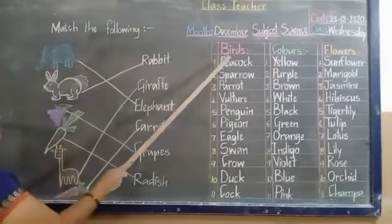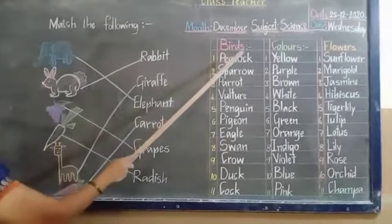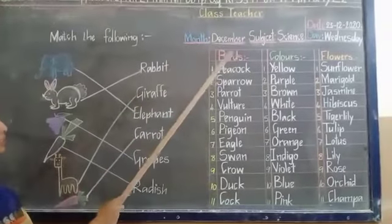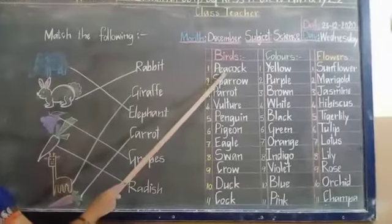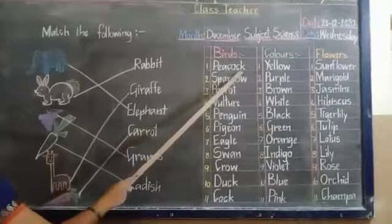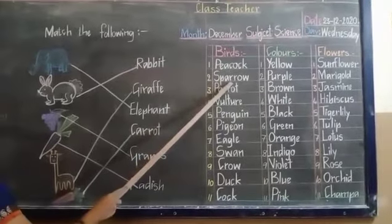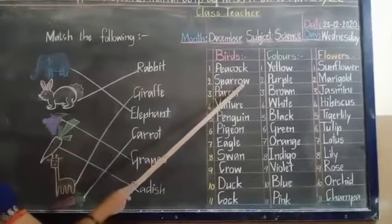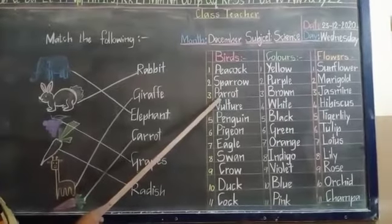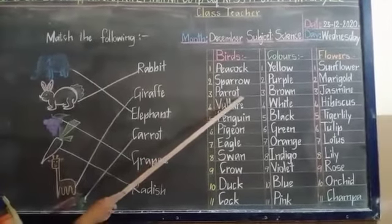And now let us learn the spellings. Birds. B-I-R-D-S. Birds. Peacock. P-E-A-C-O-C-K. Peacock. Sparrow. S-P-A-R-R-O-W. Sparrow.